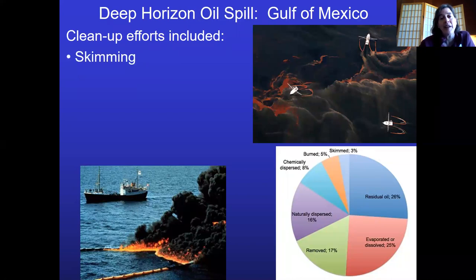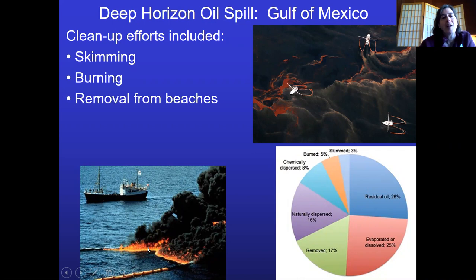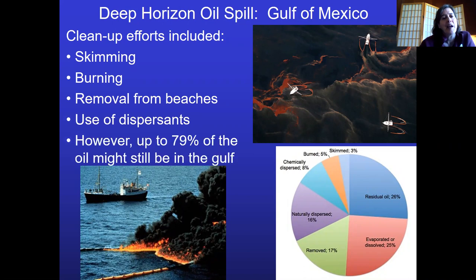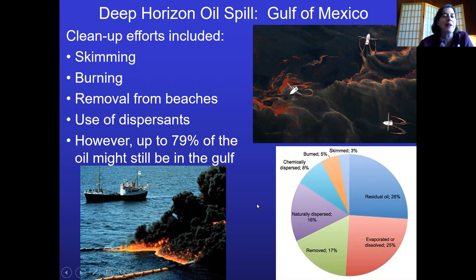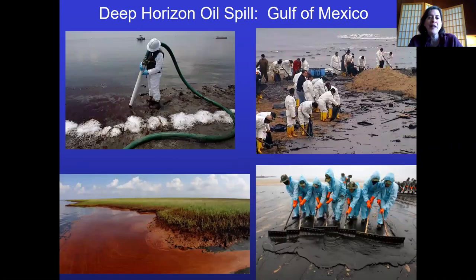Cleanup efforts included skimming — boats going out with skimmers to scrape oil off the surface — burning some of it off, beach cleanup, and the use of dispersants. A lot of the oil is probably still in the Gulf at depth and we can't see it. The total long-term damage to both surface and deep sea ecosystems may take decades to fully assess.